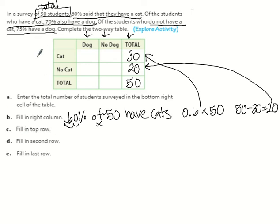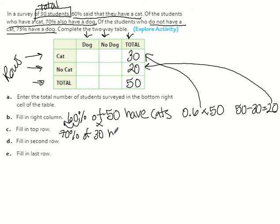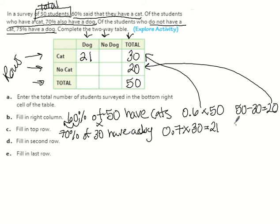Now fill in the top row. Of the students who have a cat — that's 30 people — 70% have a dog. So 70% of 30 have a dog: 0.7 times 30 equals 21. That goes in the cat-and-dog cell. Then 30 minus 21 equals 9 — those are the people who have a cat but not a dog.